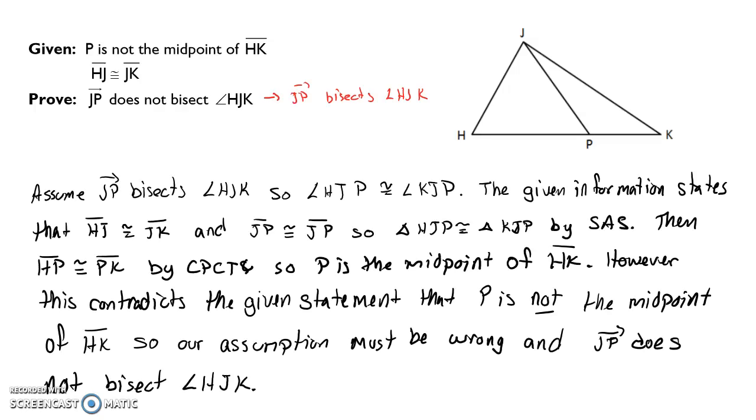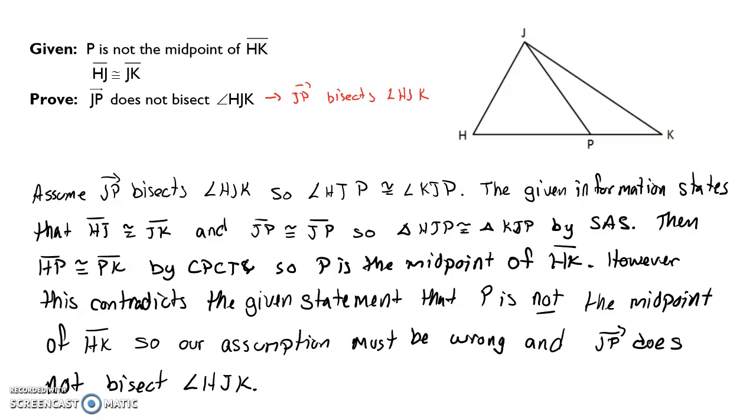All right, hopefully you had a chance to wrap this up. Our assumption that that ray does bisect the angle gives us two congruent angles. We are given segment HJ and segment JK are congruent, and we have reflexive property. So that allows us to conclude by side-angle-side that our triangles are congruent, which means our segments are congruent, which means P is a midpoint, and that's our contradiction. So we state that we have, we state both parts of the contradiction, state it's a contradiction, our assumption must be wrong, therefore, JP does not bisect angle HJK.